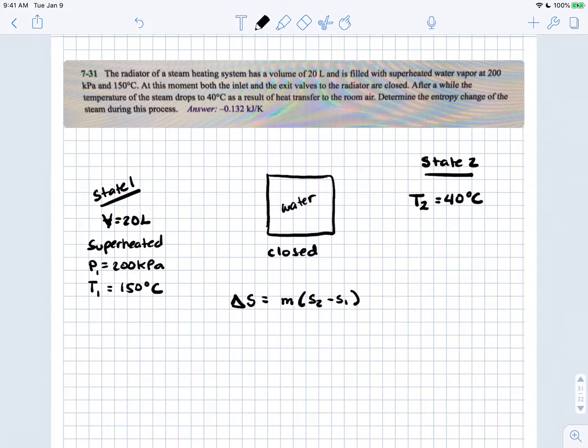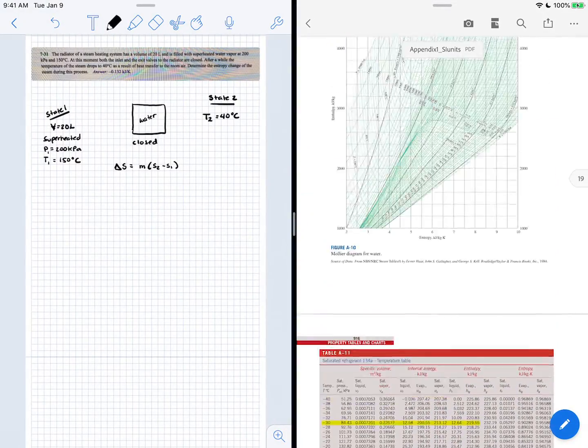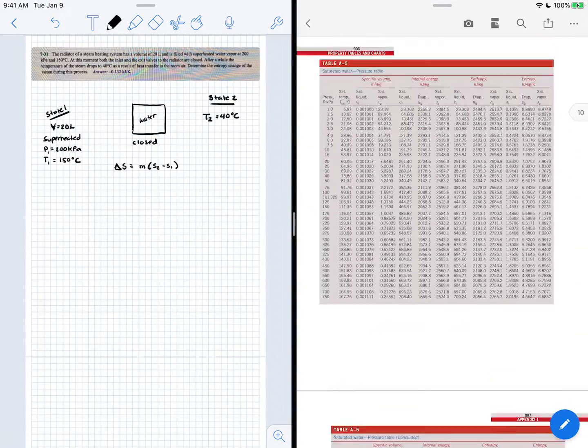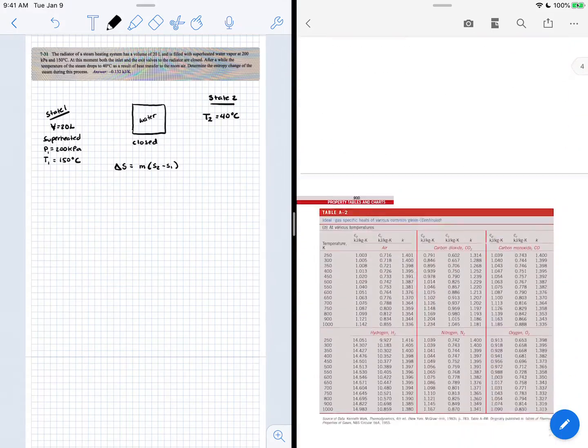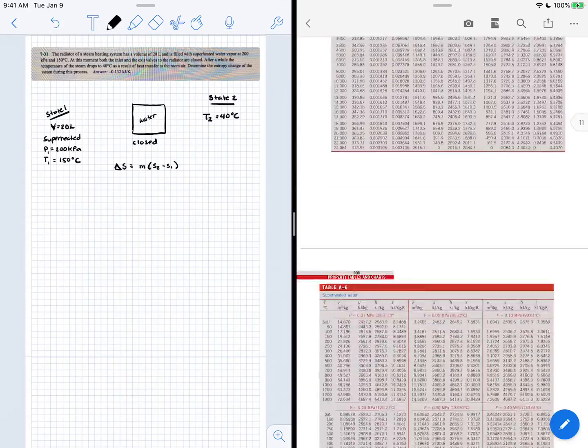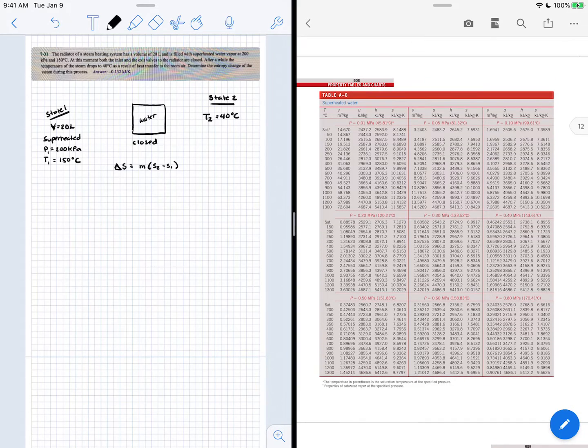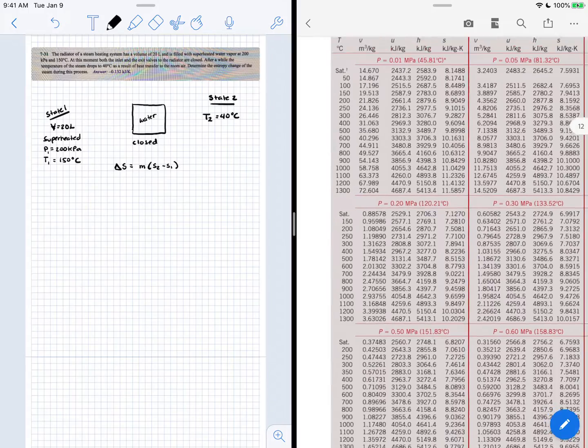Let's start by collecting information on state 1. We know it's superheated, and we'll go to the thermodynamic tables to grab all the information we need to solve this problem. Let's open our thermo tables and go to the superheated steam tables at a pressure of 200 kilopascals, which is 0.2 megapascals.